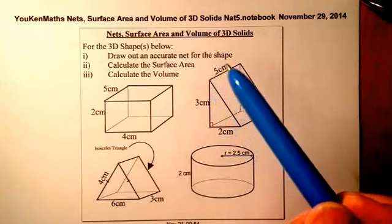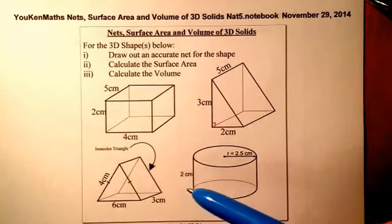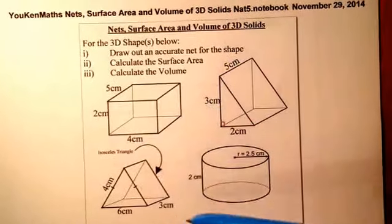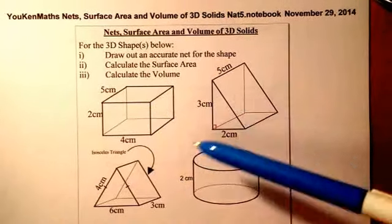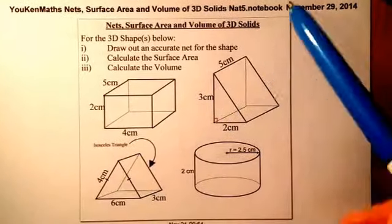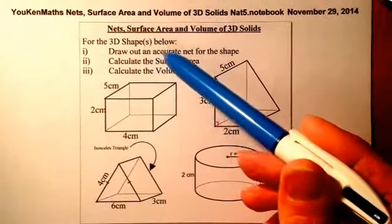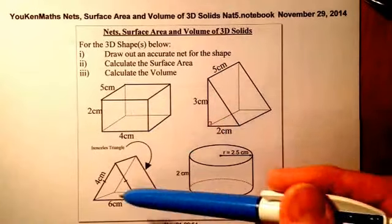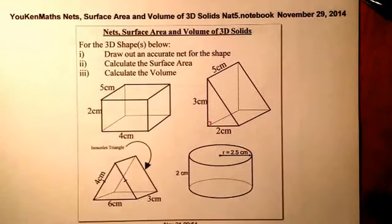Today we're looking at nets, surface area and volume of 3D solids. What we're going to do is draw an accurate net for each of these four different 3D shapes, and we're going to calculate the surface area and also calculate the volume for each of these as we go along.